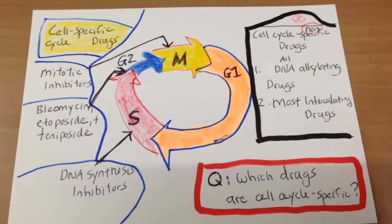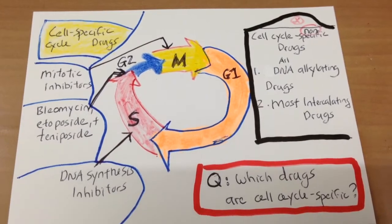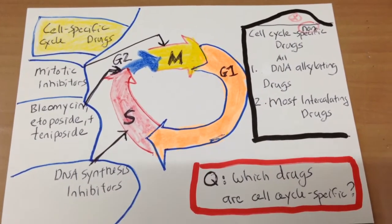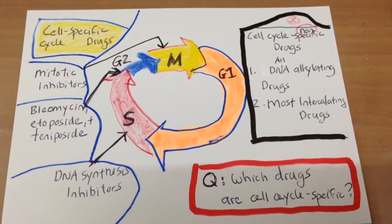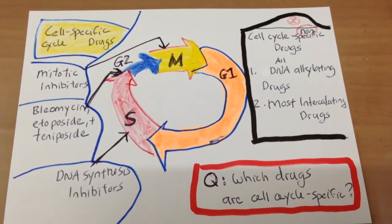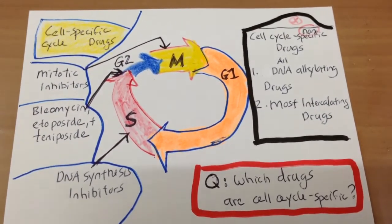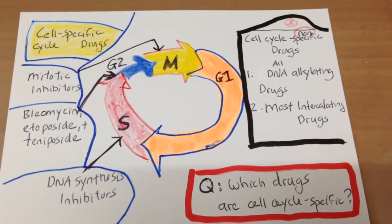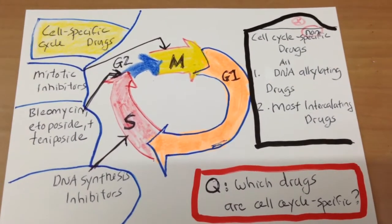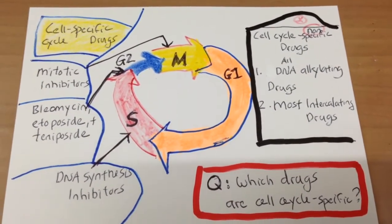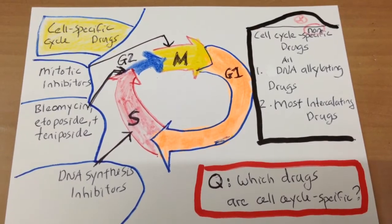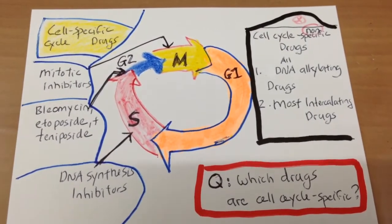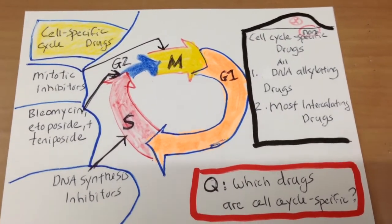First, cell cycle non-specific drugs: these include all the DNA alkylating drugs and most of the intercalating drugs. On the other side, the cell cycle specific drugs — first we have the mitotic inhibitors.